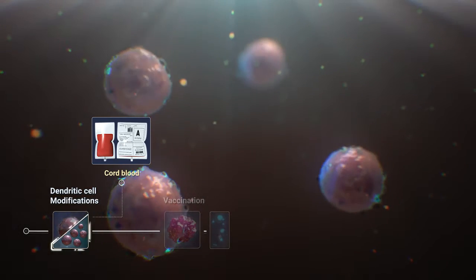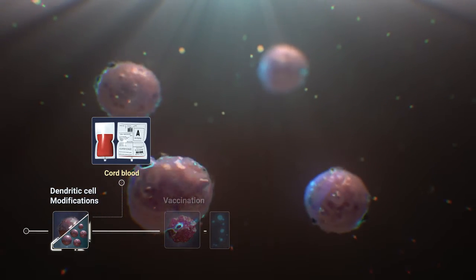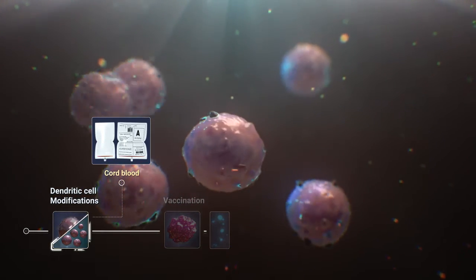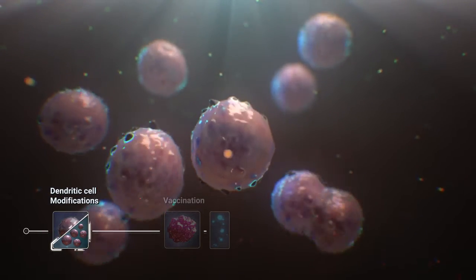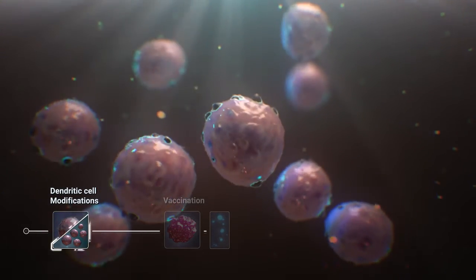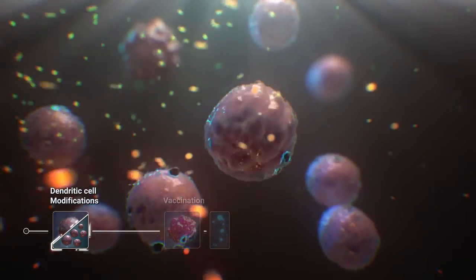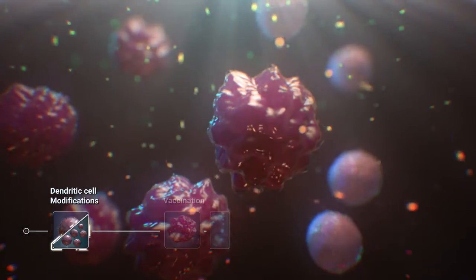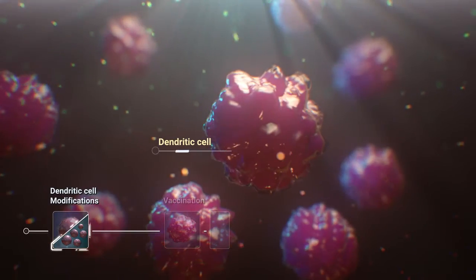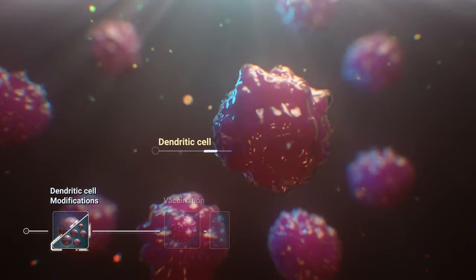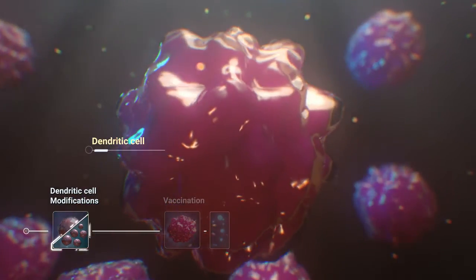In a specialized laboratory, the stem cells from the remaining 20 percent of the cord blood unit are isolated and expanded. Growth factors and cytokines are added to differentiate the stem cells into dendritic cells. Dendritic cells orchestrate the immune system and can prime naive T cells to recognize specific tumor antigens.